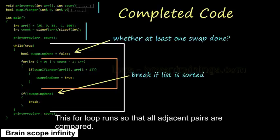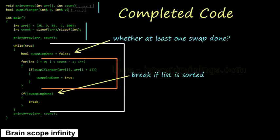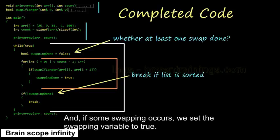This for loop runs so that all adjacent pairs are compared. And if some swapping occurs, we set the swapping variable to true.